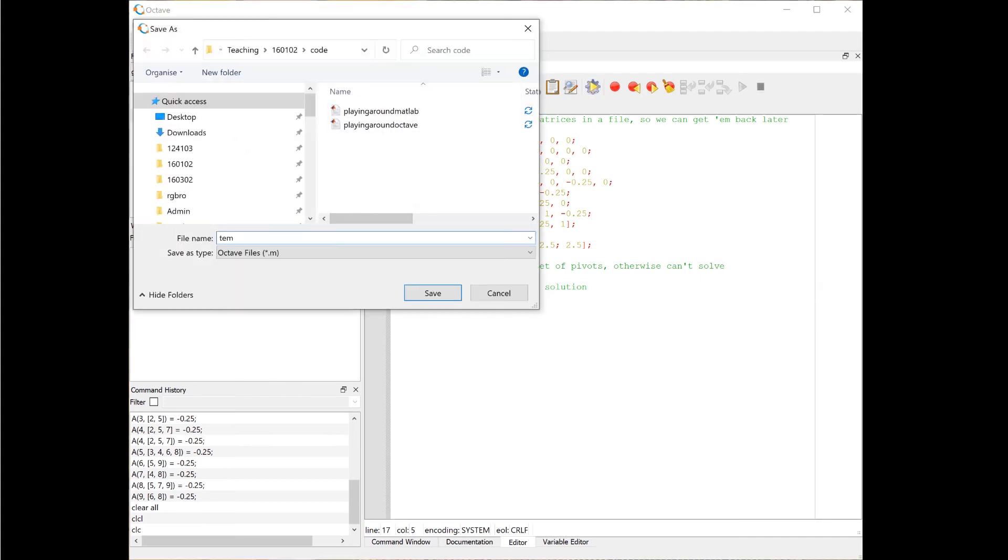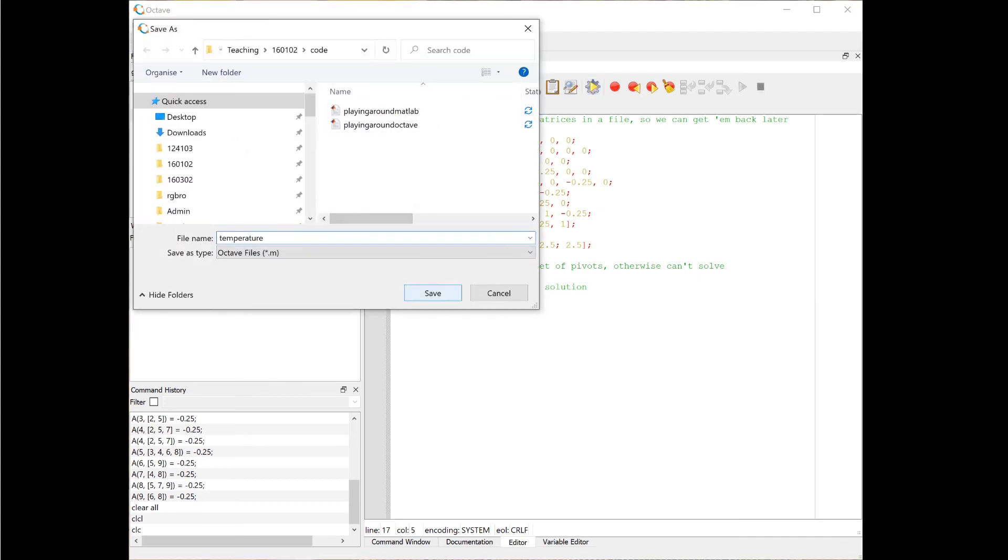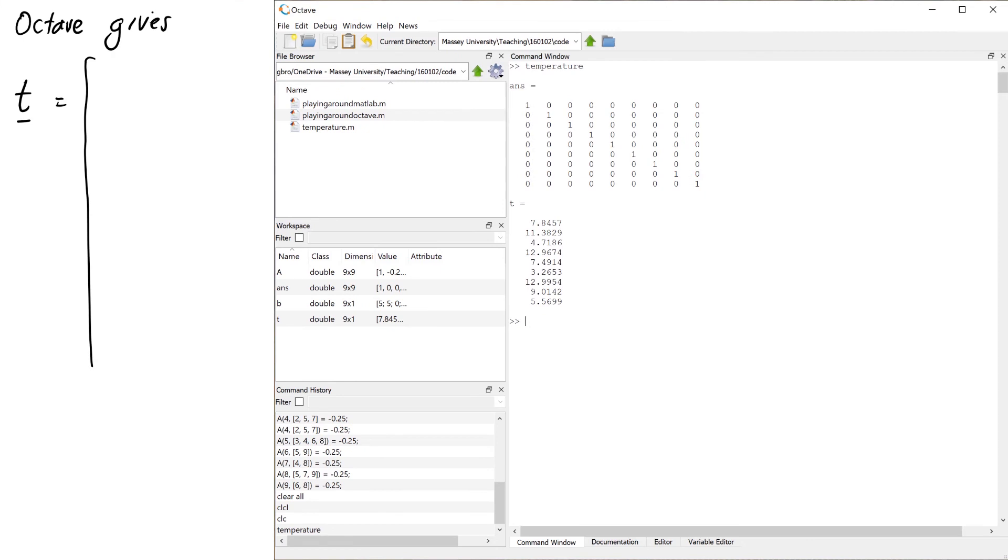Okay, so let's save it and run and see what happens. So I'll switch over to the command window and I can see that my T vector is 7.846, 11.383, 4.719, 12.967, 7.491, 3.265, 12.995, 9.014 and 5.570. So let's go ahead and draw this on our diagram.